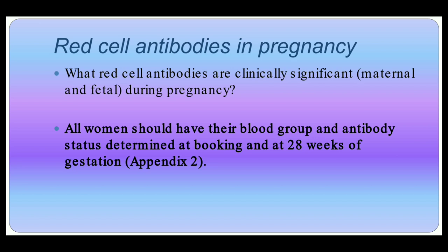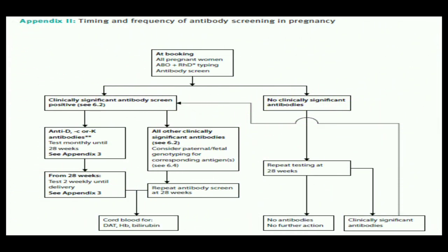We have to discuss what red cell antibodies are clinically significant — maternal and fetal — during pregnancy. It is very important that all women should have their blood group and antibody status determined at booking and at 28 weeks. This is for all women. We should also check Appendix 2 for important information, where the timing and frequency of antibody screening in pregnancy is discussed.